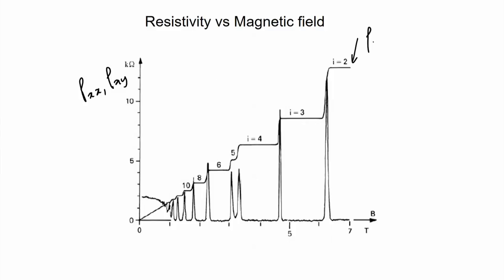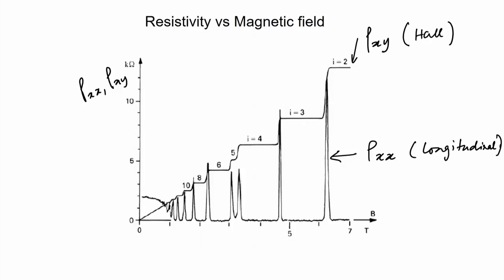The step-like plateaus in the plot are for the Hall resistance rho_xy, and the spikes are for the longitudinal resistance or magnetoresistance. In the classical Hall effect, the Hall resistance as a function of B was a straight line. Here it is far from a straight line — there are plateaus at integer values, at i equal to 2, 3, 4, 5, 6, 8, 10, and so on, in units of h over e squared.